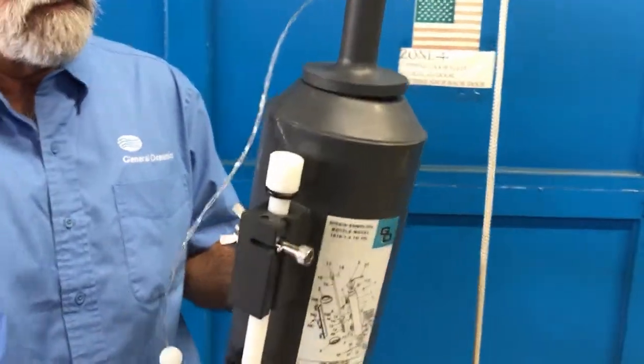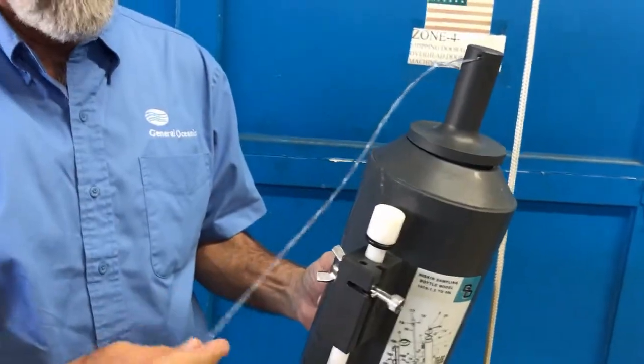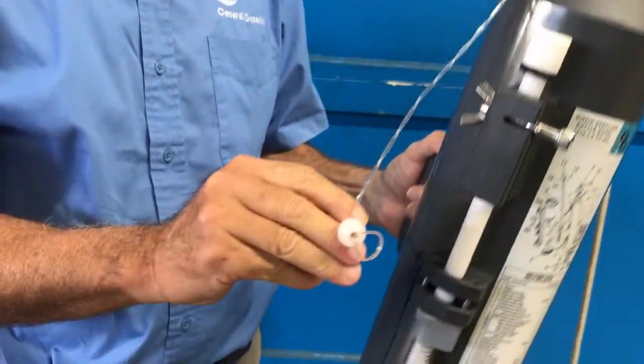Both end stoppers are equipped with lanyards made from monofilament line with copper crimp sleeves.